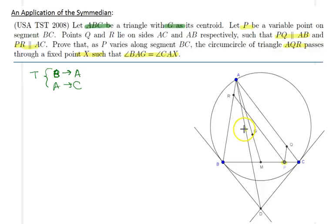Let me go ahead and mark that point as X prime, and ultimately we will show that X prime and X are the same points. My claim is that X is the center. Let X be the center of spiral similarity T.